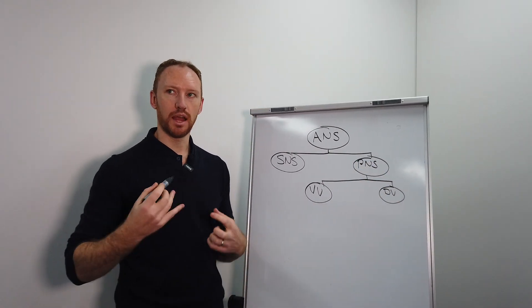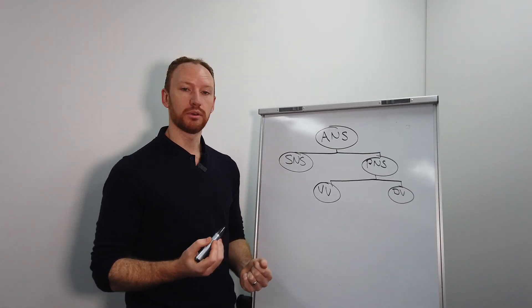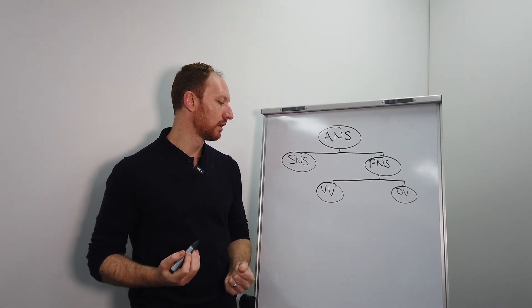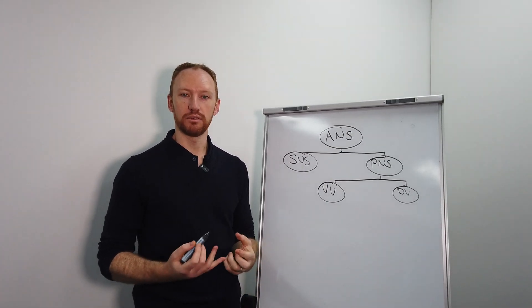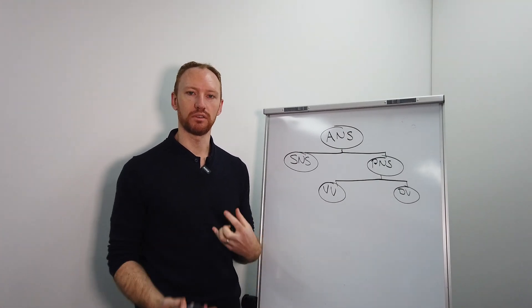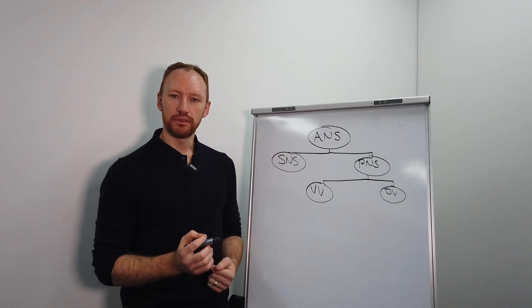Ventral just means towards the front, so anatomically it's the front part of that nervous system, and dorsal just means towards the back, so anatomically towards the back of that nervous system. And vagal is just referring to the name of the nerve, and vagus means wandering. It's actually the longest nerve in our body.